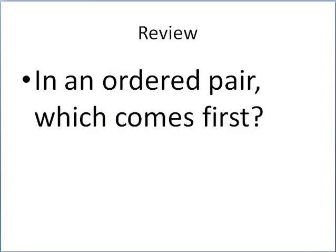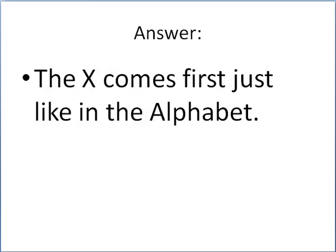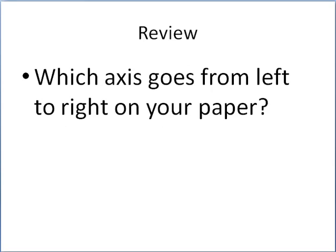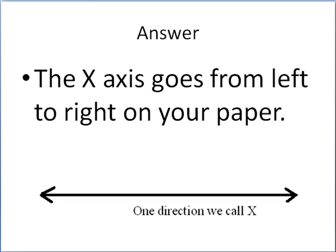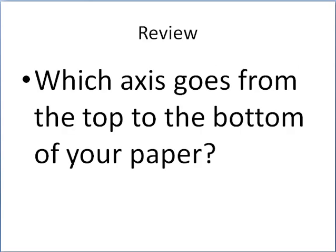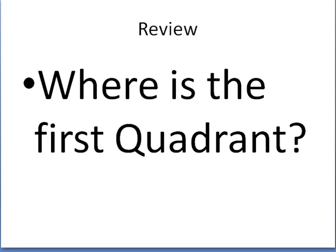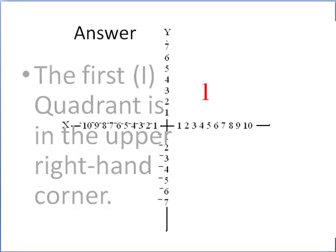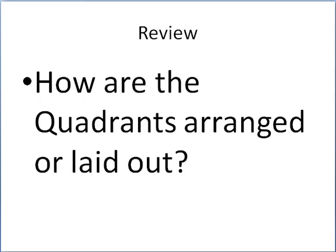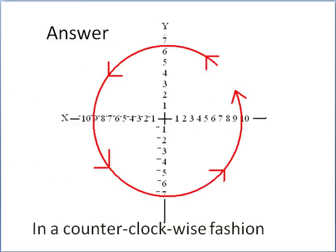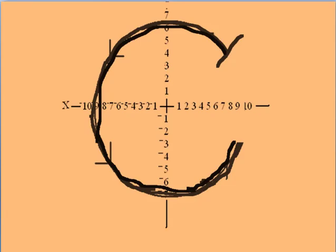In an ordered pair, which comes first? The x comes first, just like in the alphabet. Which axis goes from left to right on your paper? That would be the x-axis. Which axis goes from top to bottom? That would be the y-axis. Where is the first quadrant? The first quadrant is in the upper right-hand corner. How are the quadrants arranged? They're laid out in a counterclockwise direction, just like drawing a capital C.